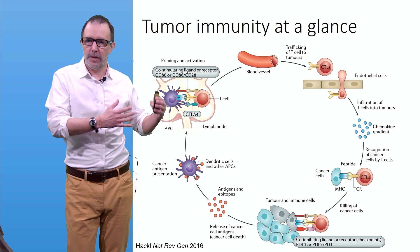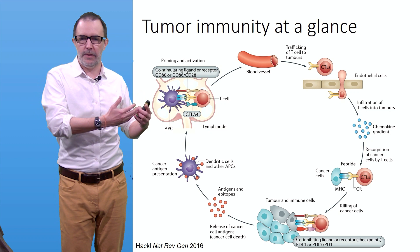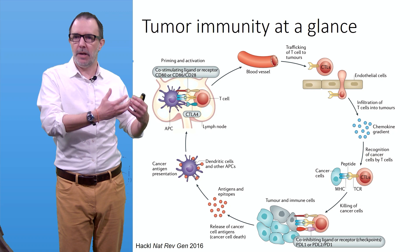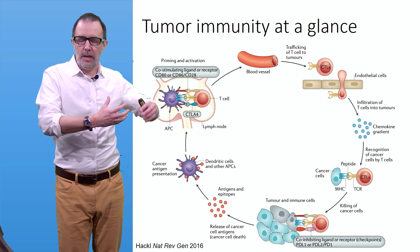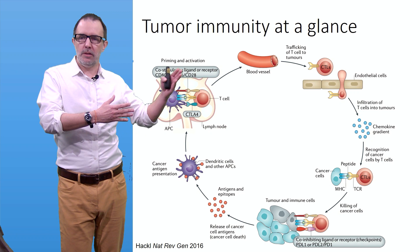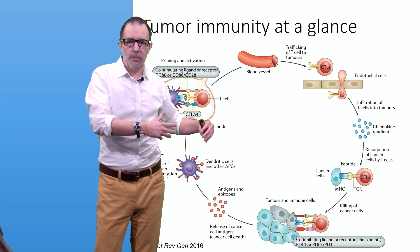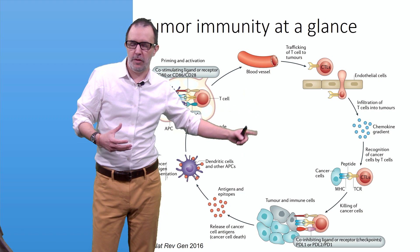What happens broadly is clonal selection — only the T cells that can recognize the specific antigens and epitopes will be selected and activated by the dendritic cells and ordered to proliferate. They will then migrate into the blood vessels, guided by chemokines and chemotaxis gradients, into the tumors. There, the interaction between T cells and cancer cells leads to the killing of those cancer cells, and the cycle starts again.